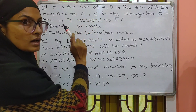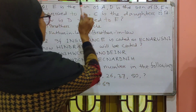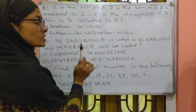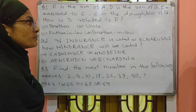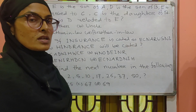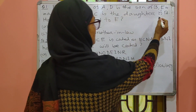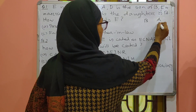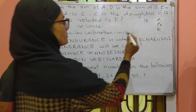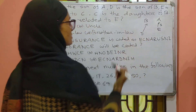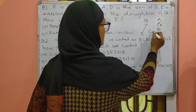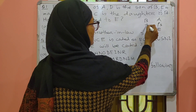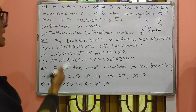E is the son of A. D is the son of B. E is married to C. C is the daughter of B — she is a daughter and D is a son of B. How is D related to E?